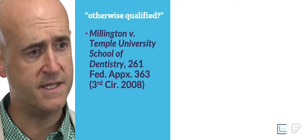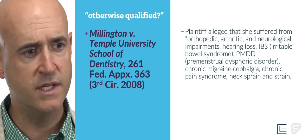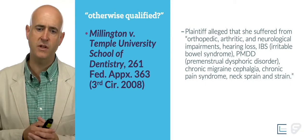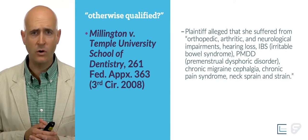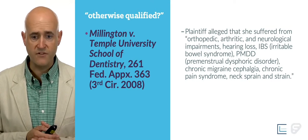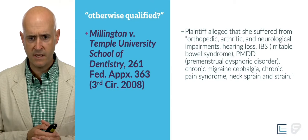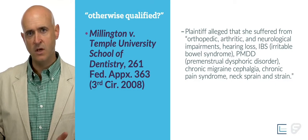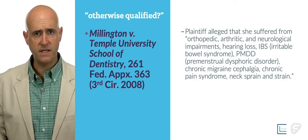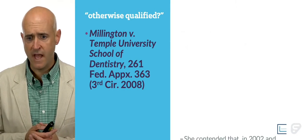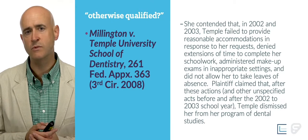A case from the Third Circuit, 2008 — Millington v. Temple University School of Dentistry. The plaintiff alleged eligibility for 504 and ADA protection on the basis of orthopedic, arthritic, and neurological impairments, hearing loss, irritable bowel syndrome, premenstrual dysphoric disorder, chronic migraine, chronic pain, neck sprain and strain. So we have multiple diagnoses and multiple difficulties — a student certainly presenting with physical and mental impairment.